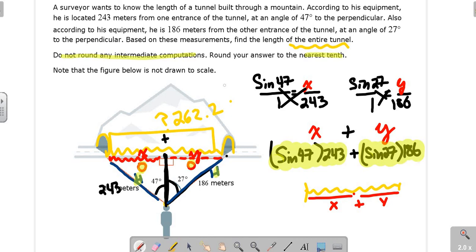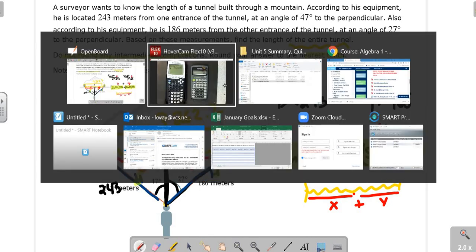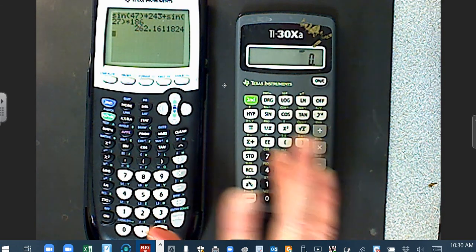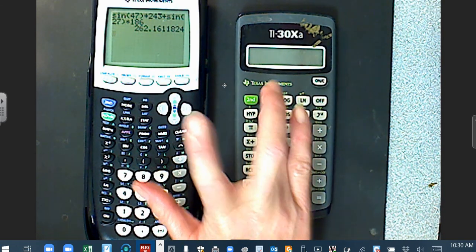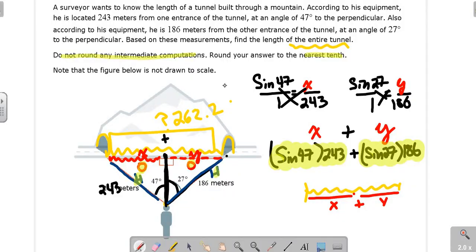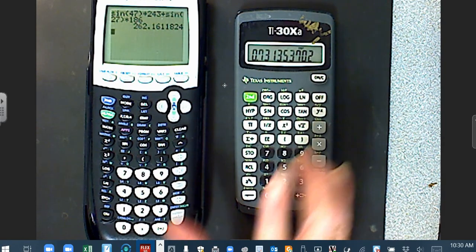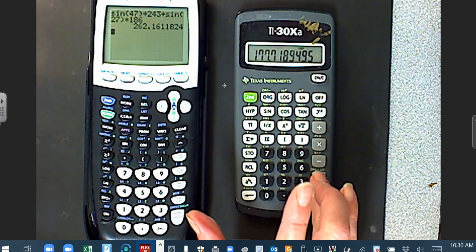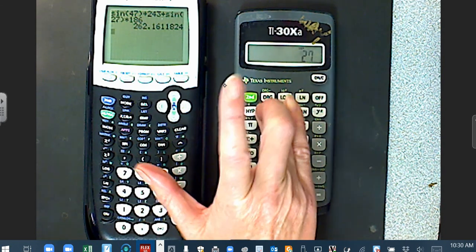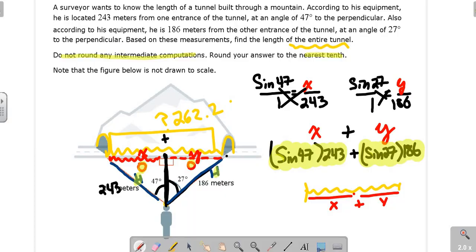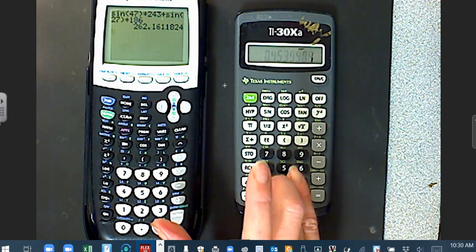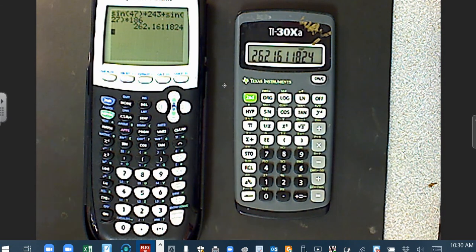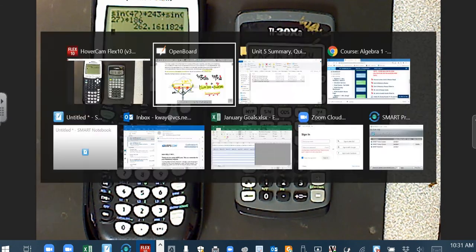Now, just for giggles, let me show you how to do this on the other calculator. First off, it was sine 47, so you have to go backwards. It's 47 sine times 243, enter, plus 27 sine times 186, enter. Ta-da! Same thing, folks. It's 262.2.